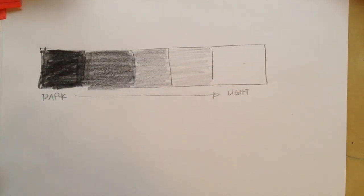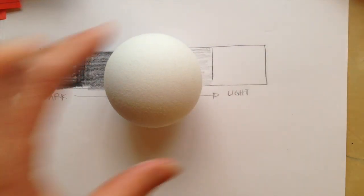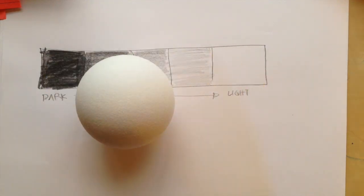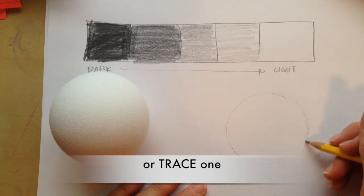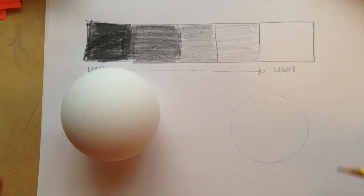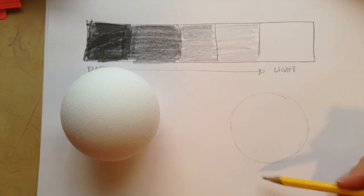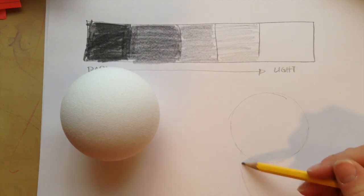Now try to draw a circle or a sphere like this using all five of those values. So first you're going to draw a circle, and then the first thing you want to do is outline your shadow that comes from it. So we kind of have two, but let's just do this one right here.